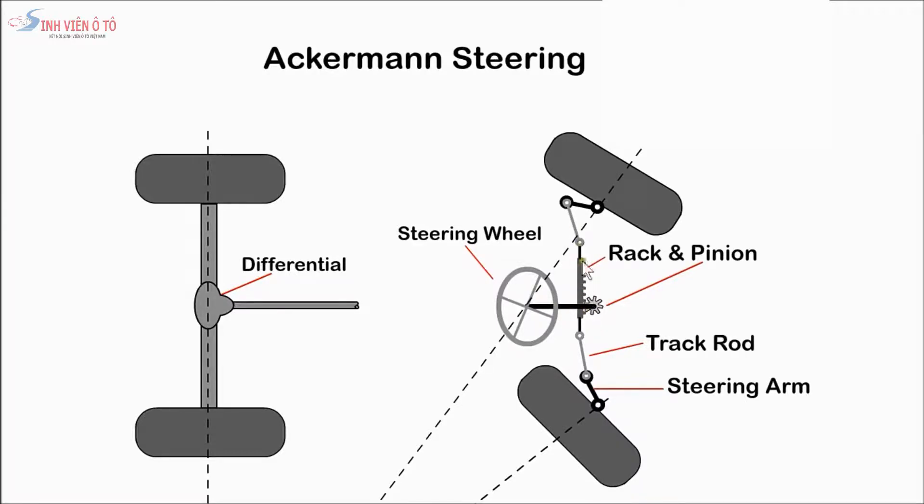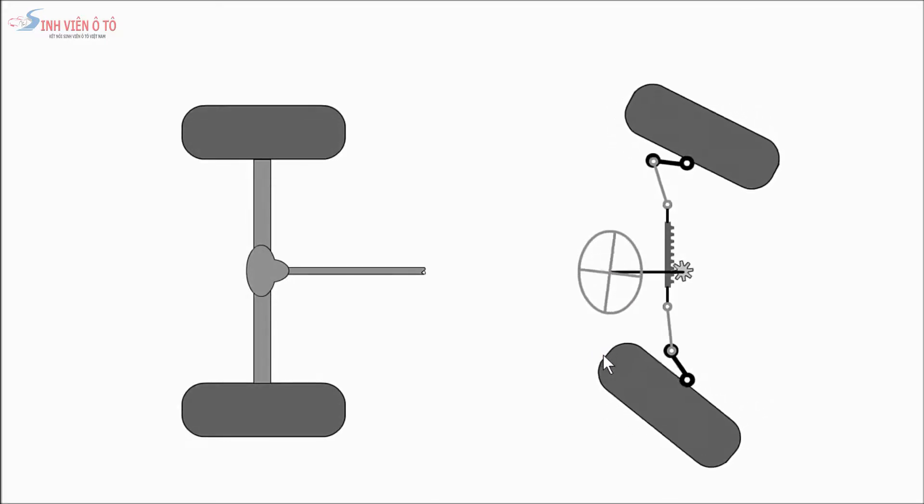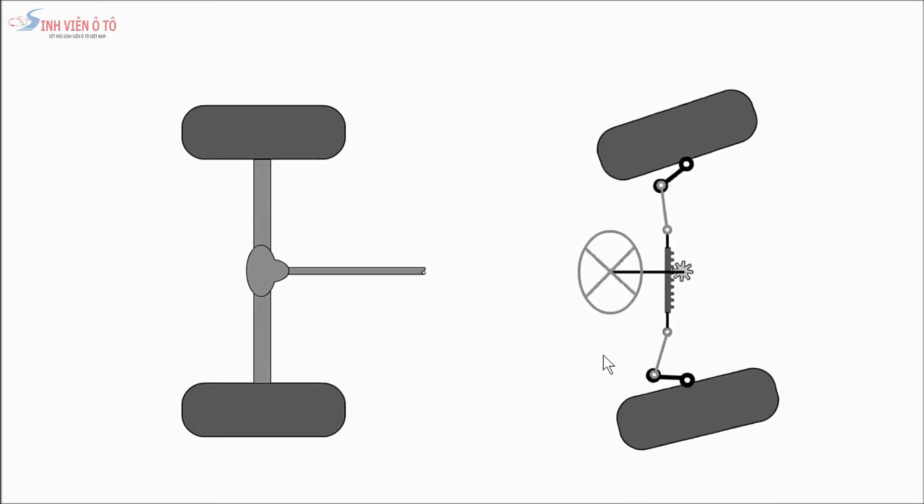The steering wheel is connected to the rack and pinion, which moves the wheels via the track rods. The track rod is connected to the wheel with the steering arm. A steering mechanism should be precise, provide feedback from the road, and have a tendency to return to the straight-ahead position after a turn.